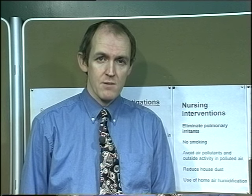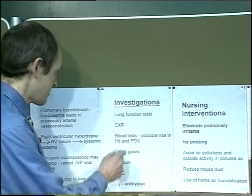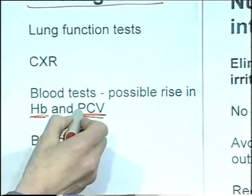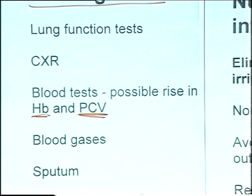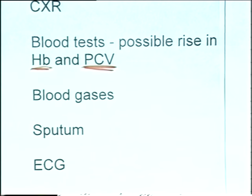Because the patients are chronically hypoxic, this is detected in the kidney. The kidney will secrete more erythropoietin, which is stimulated by oxygen lack. The erythropoietin then stimulates the red bone marrow to produce more red blood cells, increasing the amount of red blood cells in the circulatory system. So there may well be an increase in haemoglobin and an increase in packed cell volume - the percentage of the blood which is cells, also known as haematocrit.